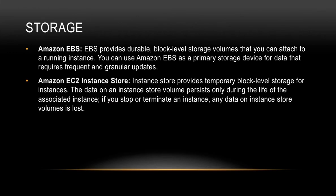Let's start by talking about the different storage options available on AWS. First, we have Amazon EBS, also known as Elastic Block Store. EBS provides durable block-level storage volumes that we can attach to a running EC2 instance. We can use Amazon EBS as a primary storage device for data that requires frequent and granular updates.